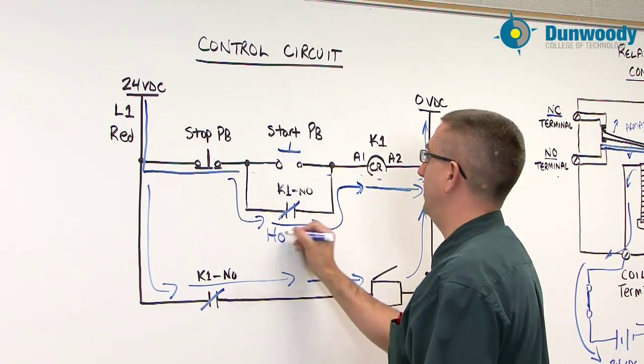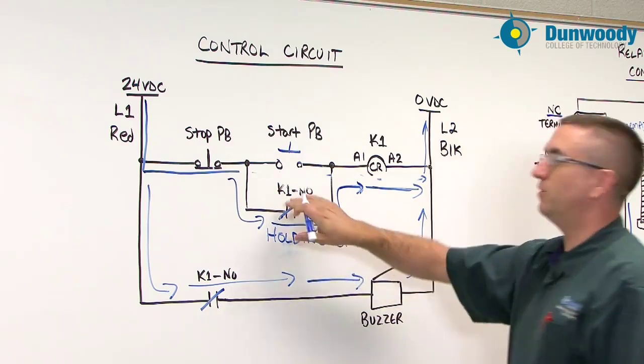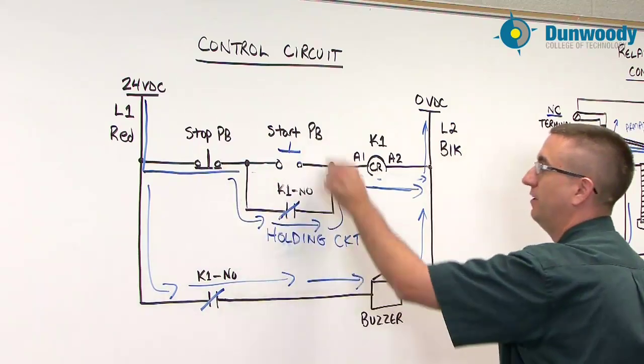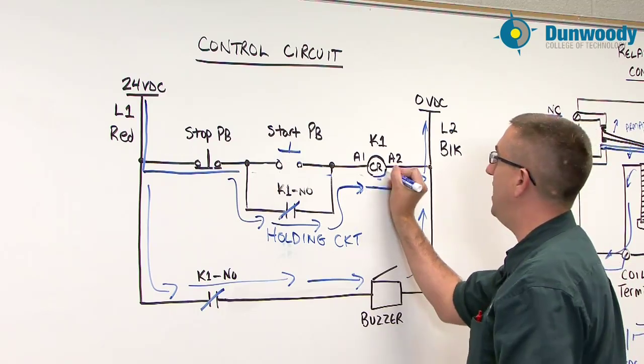And the reason why the buzzer is going to stay on is because we have a holding contact. So right here we have a holding circuit. Those contacts are not going to change state until they lose power. Well they have not lost power because no one hit the stop push button, so they haven't lost power, so they're holding this control relay on.